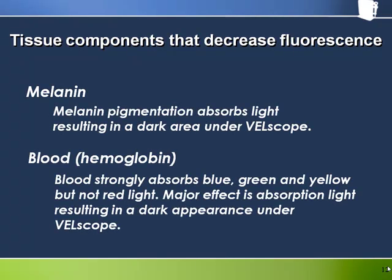Both melanin and blood will increase light absorption in the tissue. Their presence will cause a marked decrease in tissue fluorescence and result in a distinct dark area in the predominantly green oral mucosal fluorescence. In particular, blood strongly absorbs shorter wavelength light, such as blue and green. If you see inflamed tissue or vessel damage with free blood visible, you know for sure that this will appear dark through the Velscope.